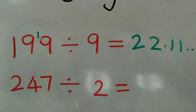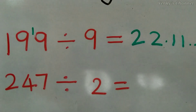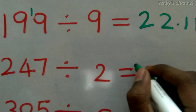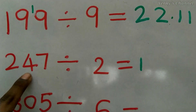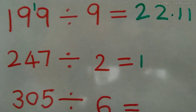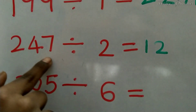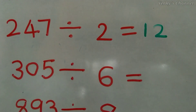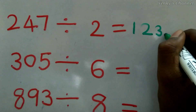Now let's check 247 ÷ 2. The first digit is 2 — as I mentioned in the previous class, if they are equal we can also take it. 2 × 1 = 2, no remainder. Now the second digit is 4, which is greater than 2, so we can use it. 2 × 2 = 4, no remainder. The third digit is 7, which is greater than 2, so we can use it as well.